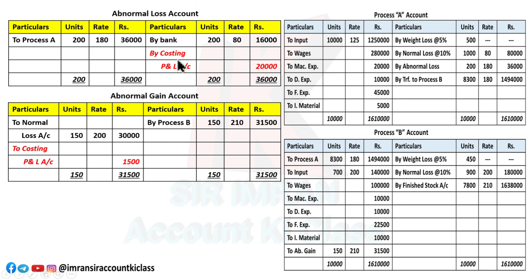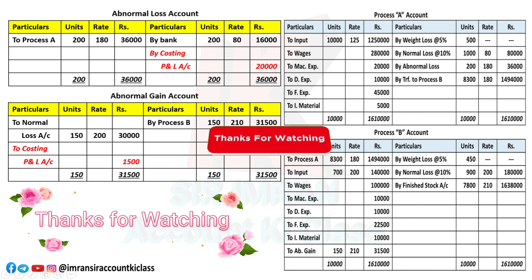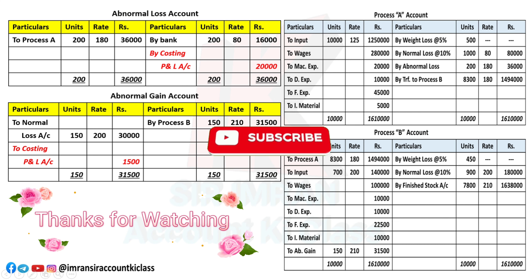To summarize question number 7: the important concept is weight loss. When weight loss is given as a percentage, only calculate the units — never write a rate or amount, because the material has evaporated. Units do decrease, so they must be considered. Hope question number 7 is clear. In the next video, we will solve question number 8, which will also include the Costing P&L account. Thank you for watching. God bless you.